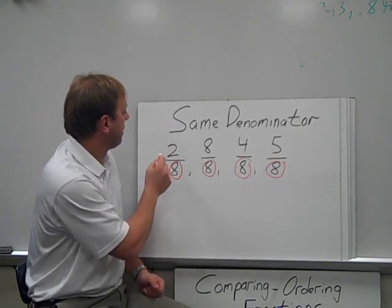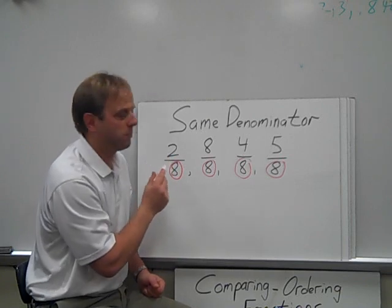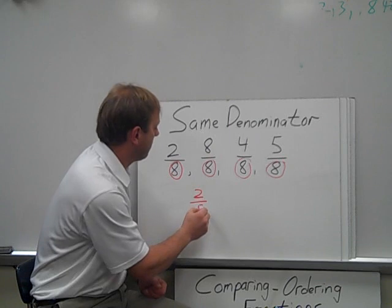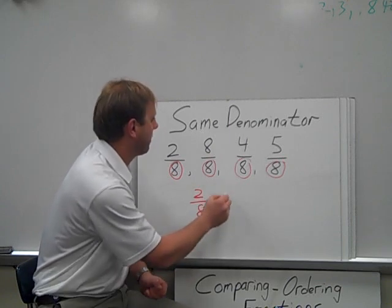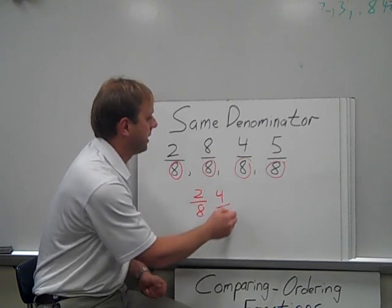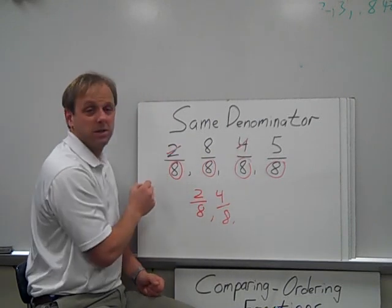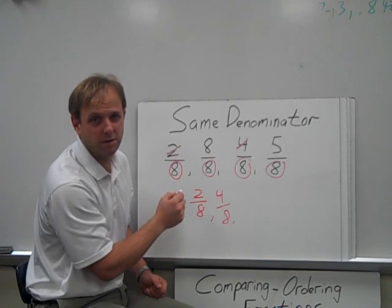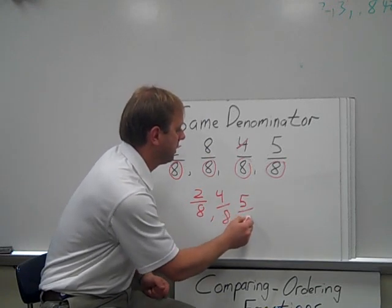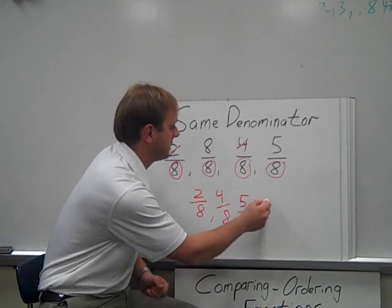So, logically, the fewer parts, the smaller the piece. When we have the same denominator, we just put fractions based on the numerator in order. And it always matters. You always want to look and see, did the order say least to greatest or greatest to least, and that usually is the only place that I see mistakes.